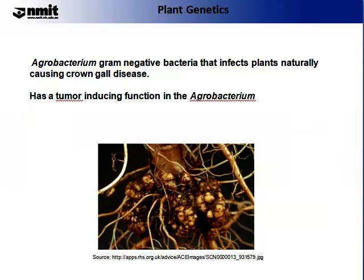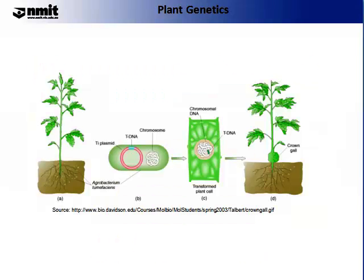The ability for Agrobacterium to transfer genes into the plant of interest is based on the characteristics that this gram-negative bacterium has. It infects plants naturally and causes Crown-Gall disease — the figure on the screen shows an example of Crown-Gall disease. It has a tumour-inducing function in the Agrobacterium.